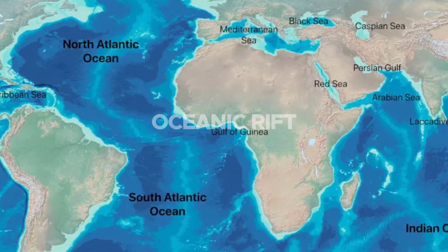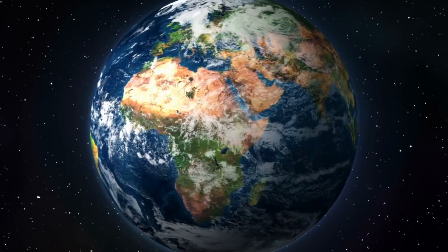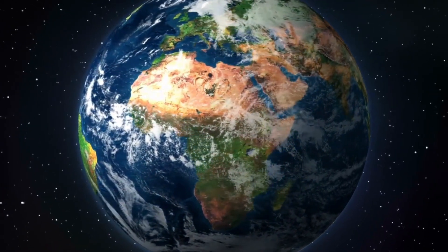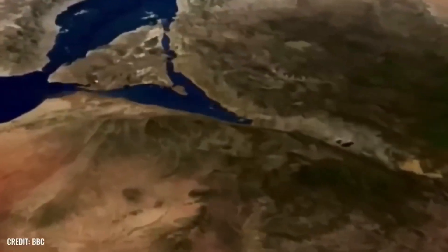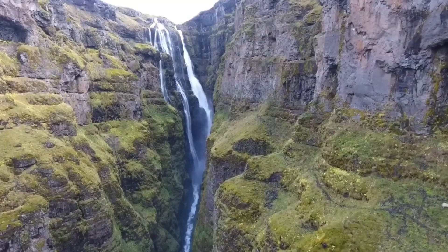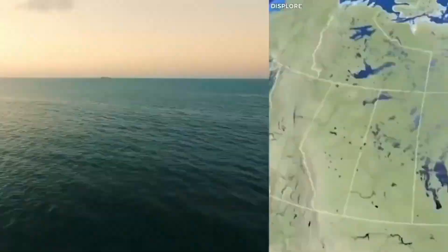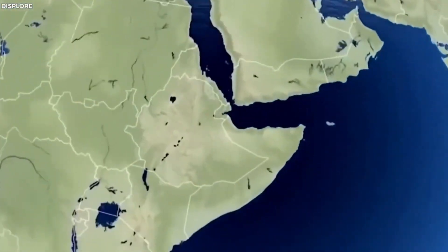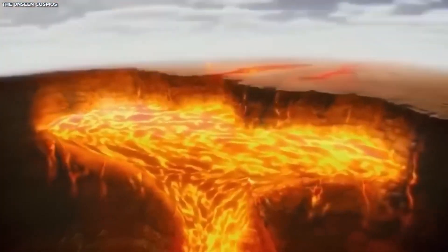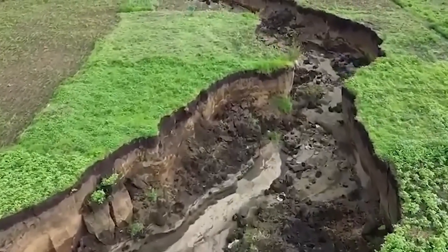The transition from a terrestrial to a marine environment in the rift zone will destroy existing ecosystems. Unique terrestrial habitats, including forests, savannas, and freshwater lakes, will be lost or significantly altered. Many plant and animal species that are unable to adapt to the new environment may face extinction, while others will become endangered due to habitat changes, resulting in a significant loss of biodiversity.